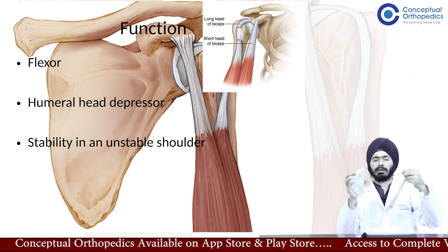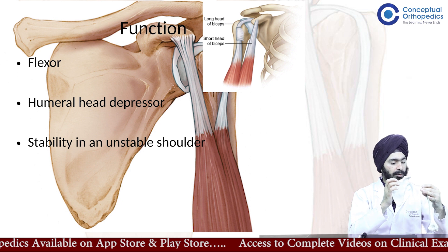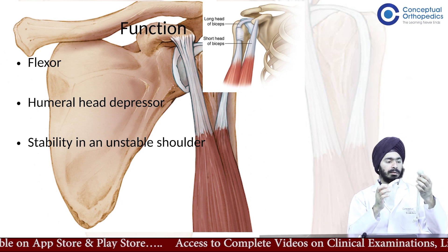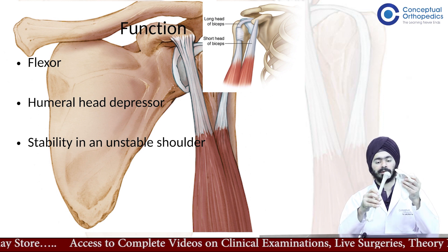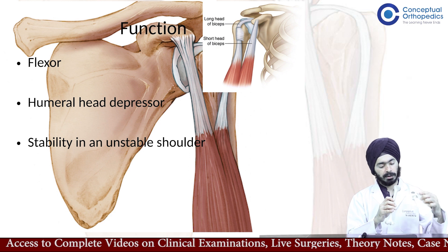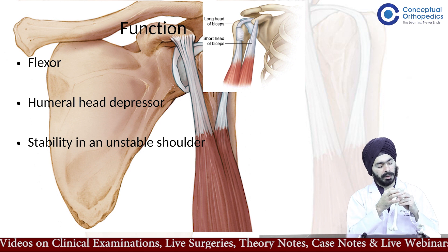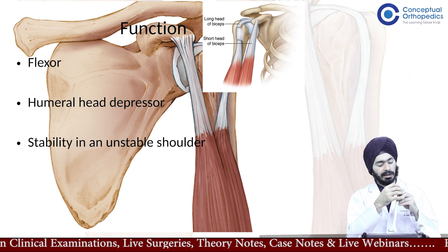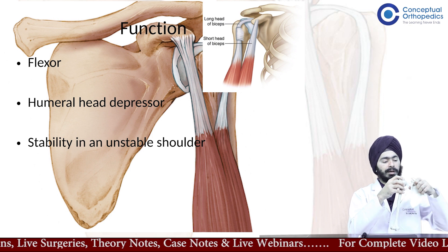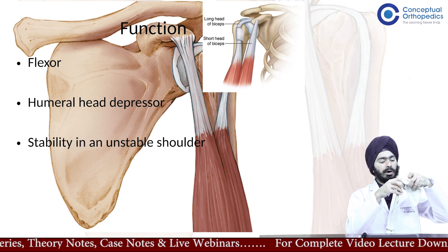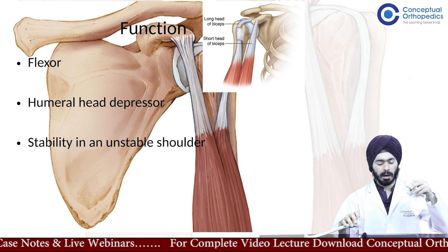Looking at the anatomy with a left-side scapula — treated as a right scapula with a corresponding right humerus — the biceps travels in the inter-tubercular sulcus between the lesser tuberosity and the greater tuberosity, then goes up through the joint and attaches onto the supraglenoid tubercle, traveling this intra-articular part.